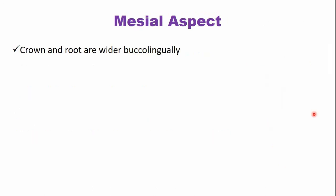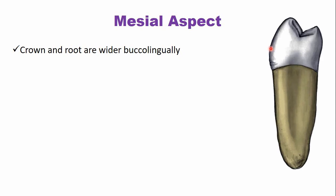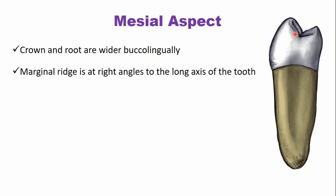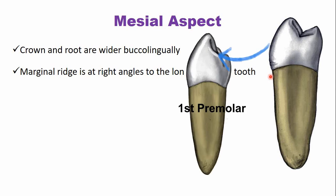In the mandibular second premolar, the crown and the root are more wider buccolingually. The mesial marginal wedge is straight or nearly at a right angle to the long axis of the tooth — nearly straight. In comparison, the mesial marginal wedge of the first premolar has a sharp slanting surface towards the cervical area.